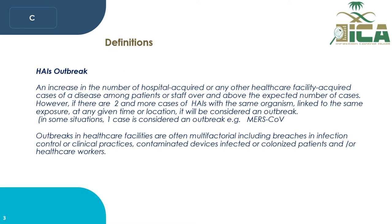A hospital-acquired outbreak is defined as an increase in the number of hospital-acquired or healthcare facility-acquired cases of disease among patients or staff over and above the expected number of cases. However, if there are two or more cases of hospital-acquired infection with the same organism linked to the same exposure at any given time or location, it would be considered an outbreak.